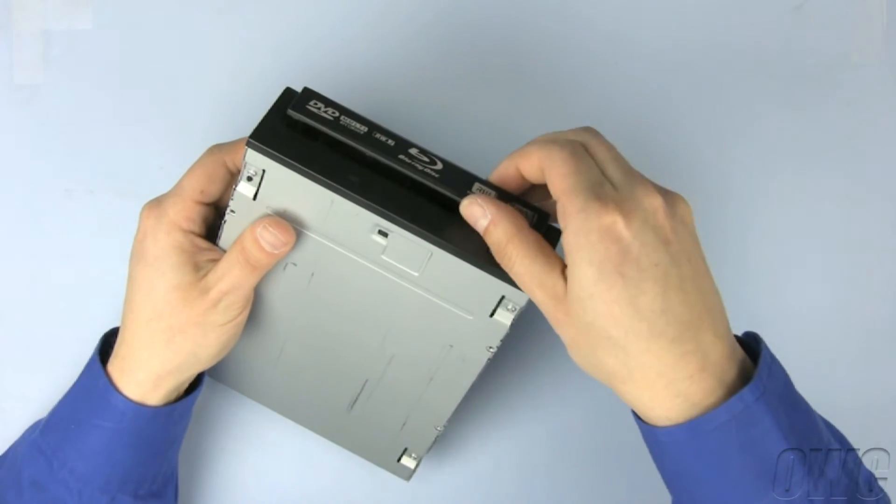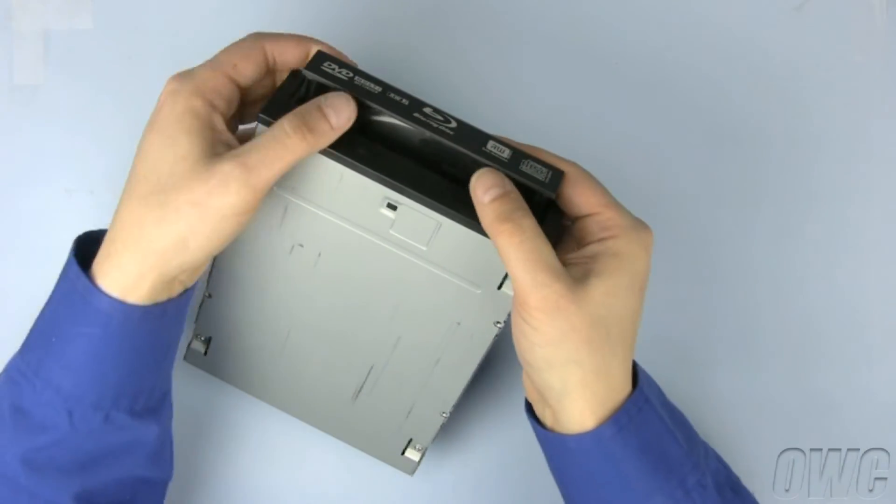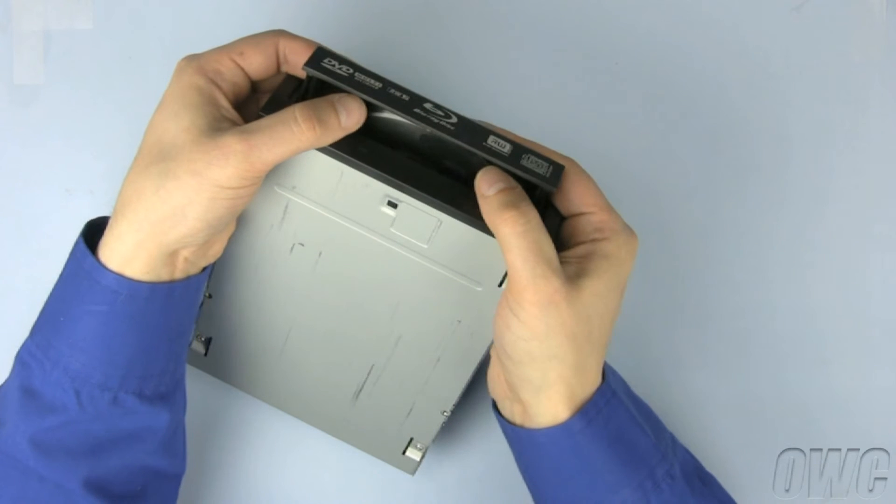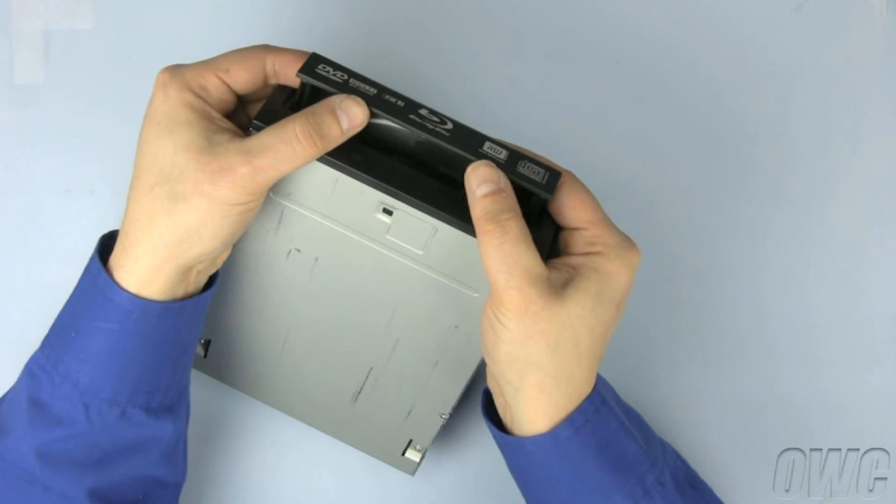Turn the drive over and gently pull the tray out a little bit farther. There are some plastic tabs roughly a third of the way in on each side that hold the tray bezel on.